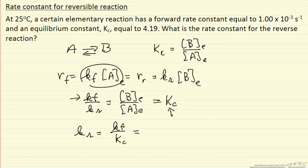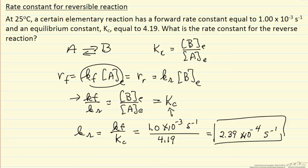The forward rate constant is 1.0 times 10 to the minus third inverse seconds, and Kc in this case is 4.19, and this gives us the reverse rate constant for this reaction.